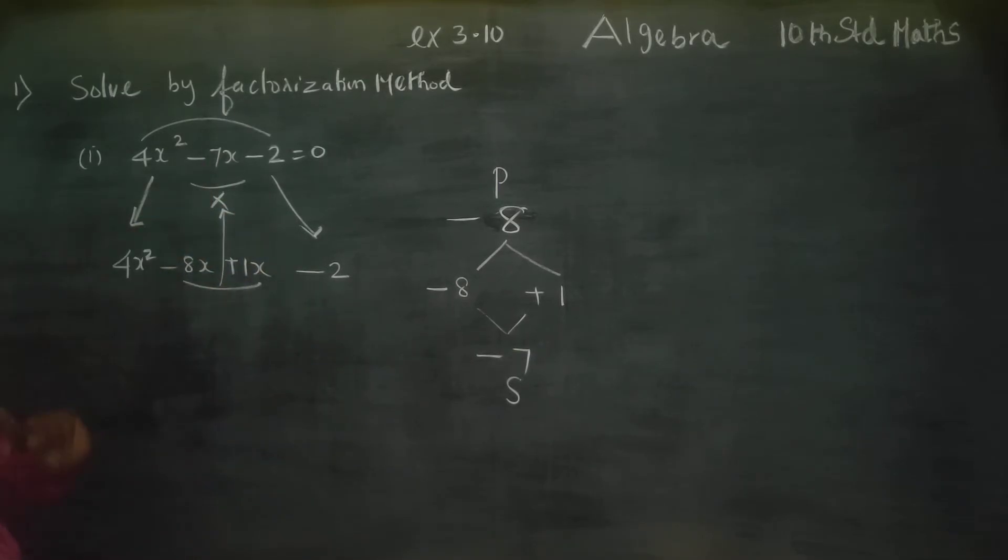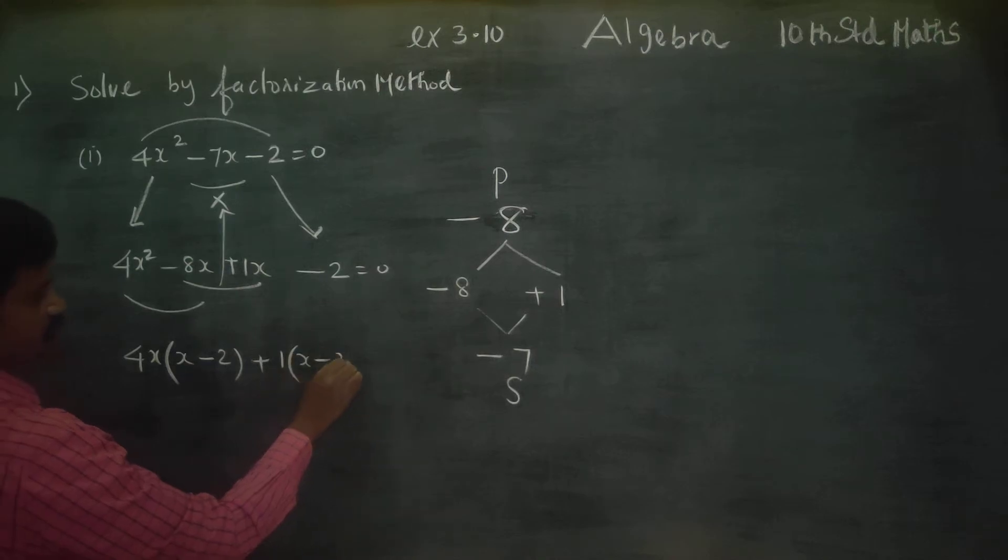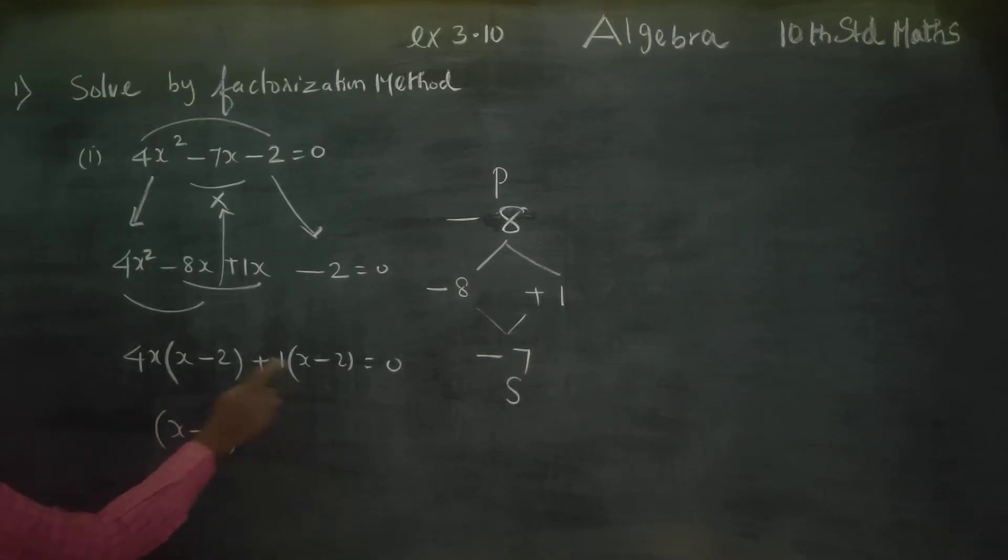4x is common, balance is x minus 2. Plus 1 times x minus 2 equals 0. Sum can be written as x minus 2 is common. Balance will be 4x plus 1 equals 0. In the brackets.